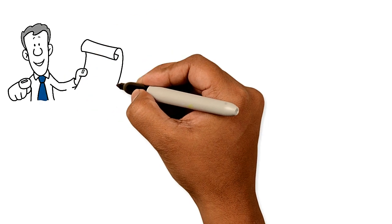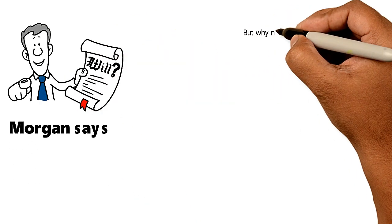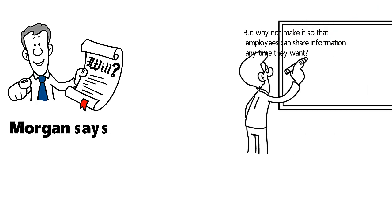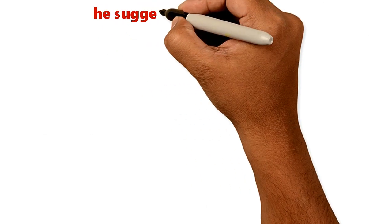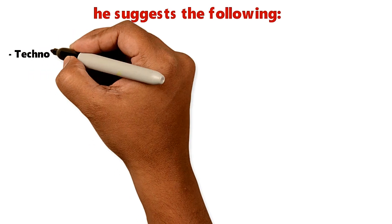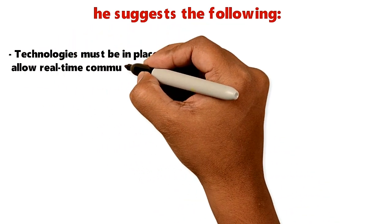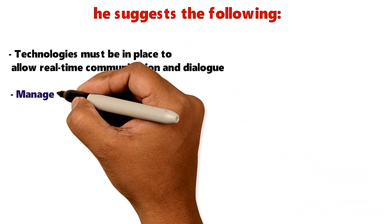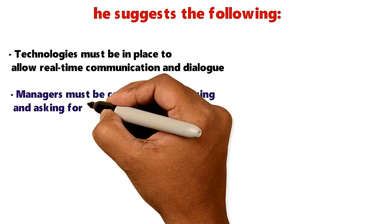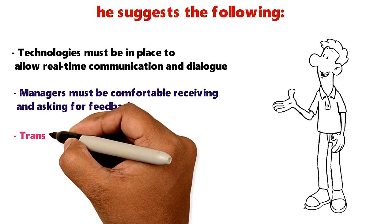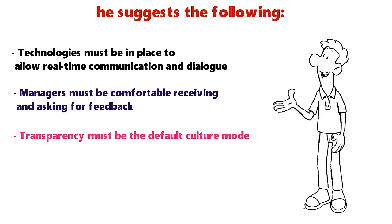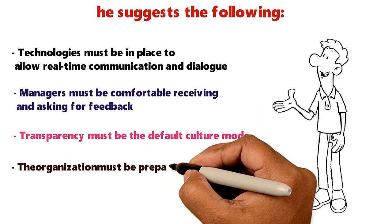Organizations typically have to ask employees for feedback, Morgan says, but why not make it so that employees can share information anytime they want? As enablers, he suggests the following: technologies must be in place to allow real-time communication and dialogue, managers must be comfortable receiving and asking for feedback, transparency must be the default culture mode, and the organization must be prepared to take action.